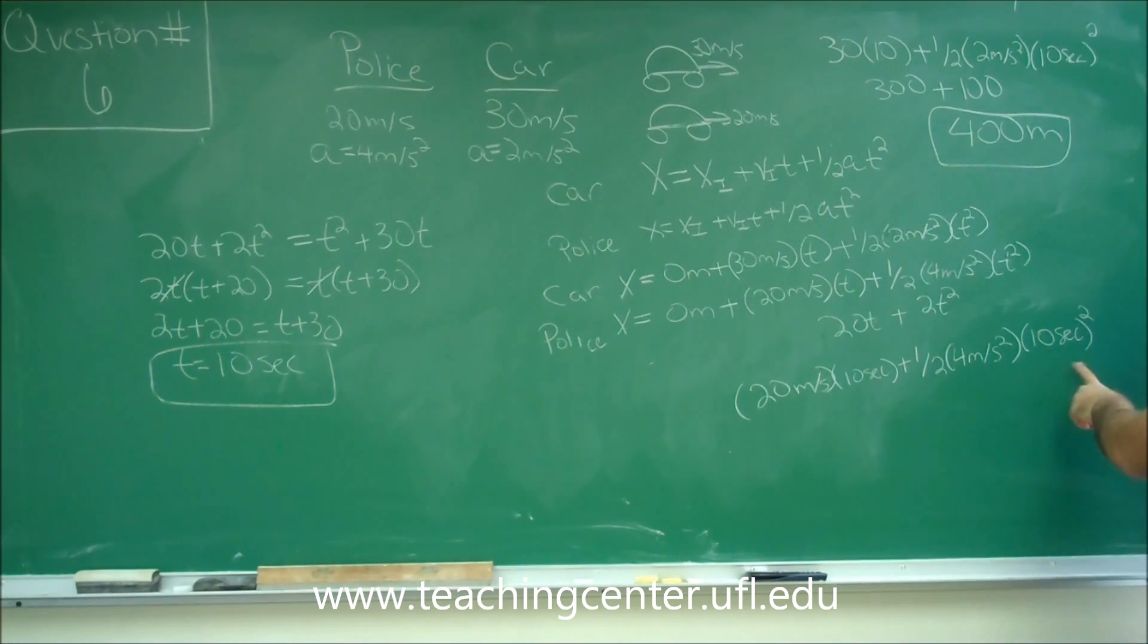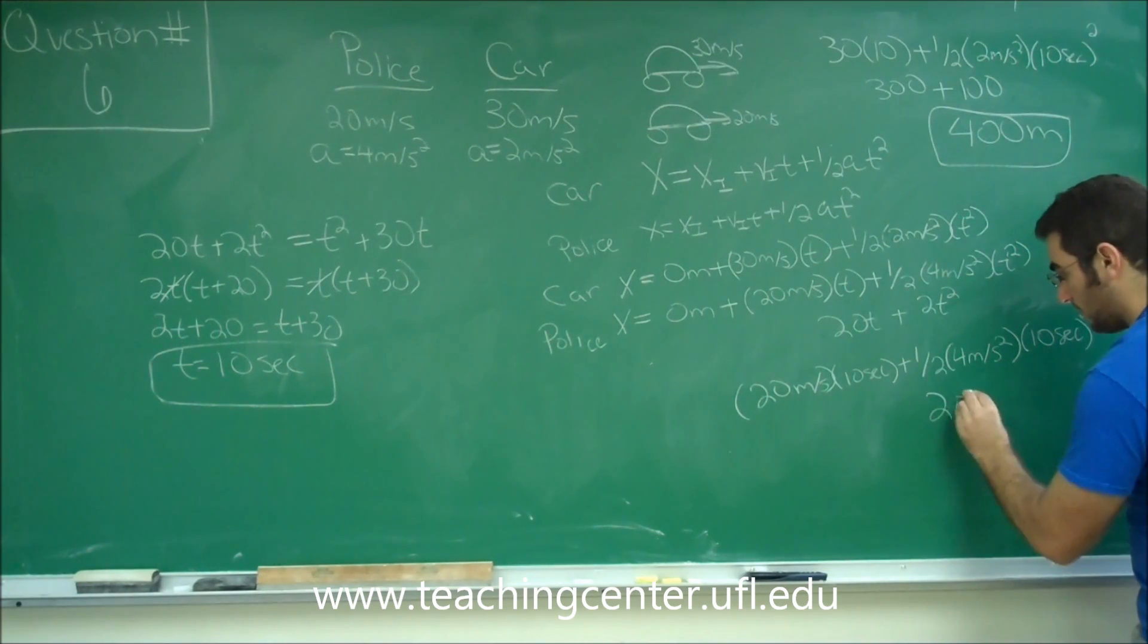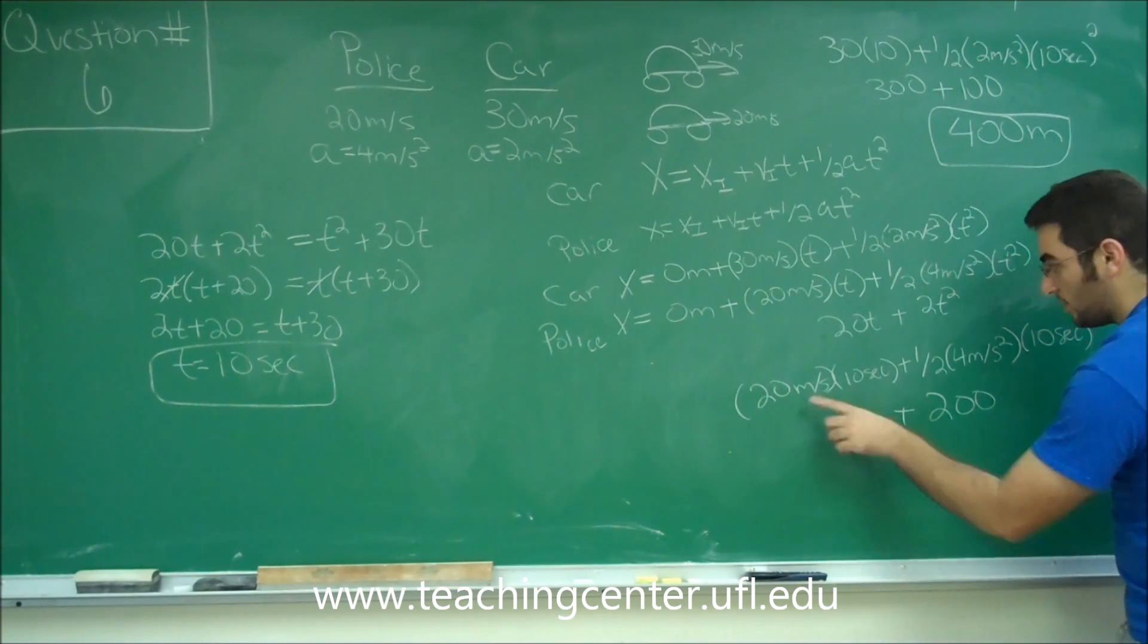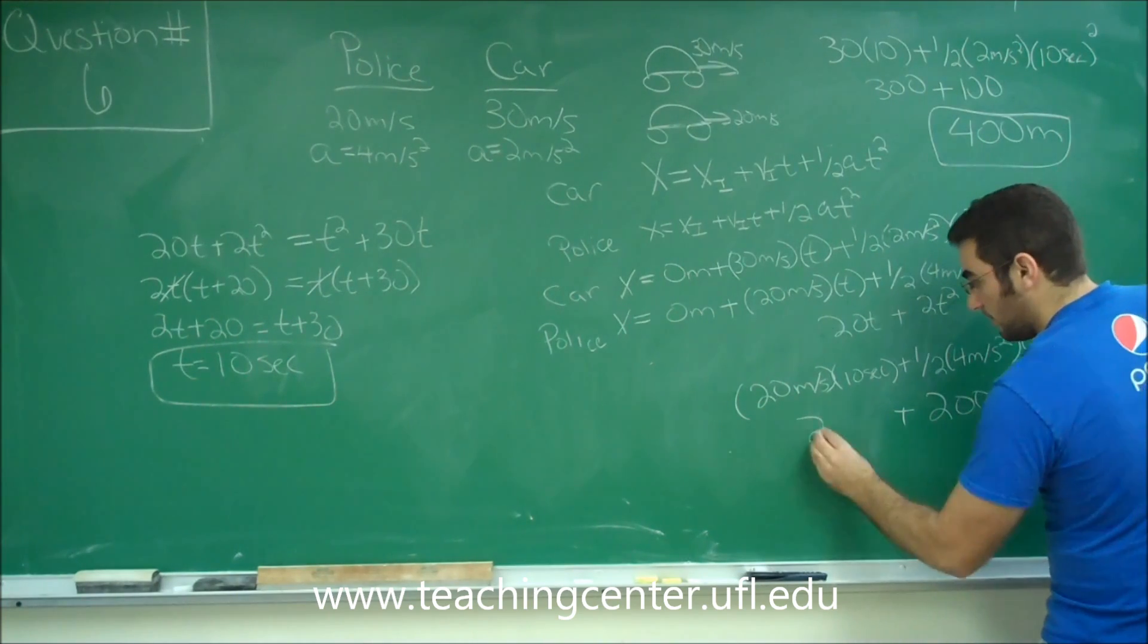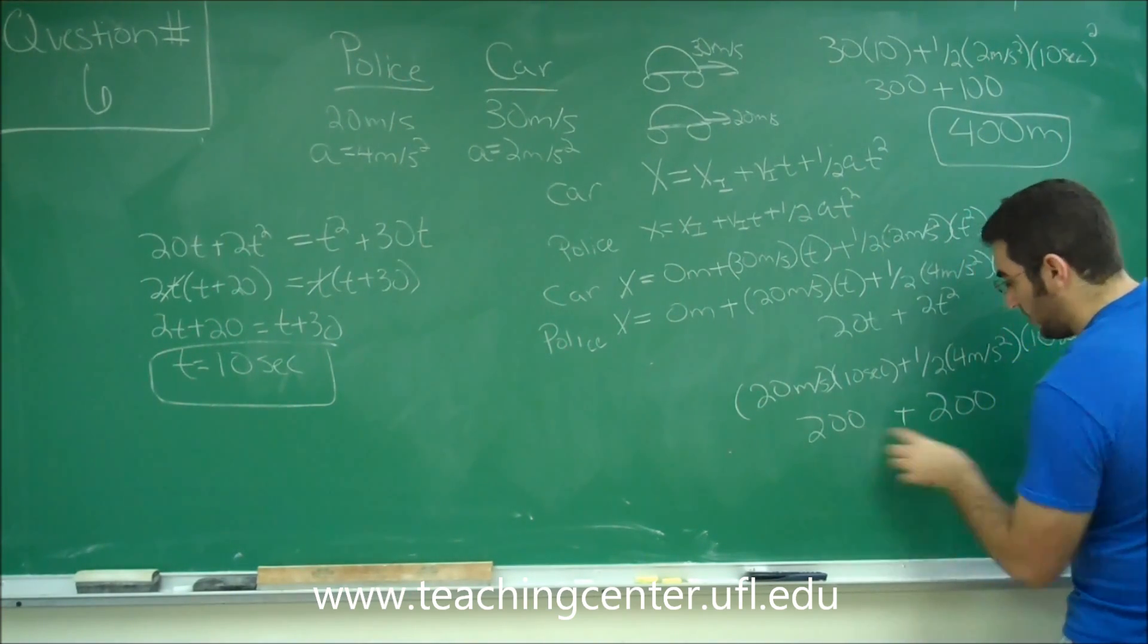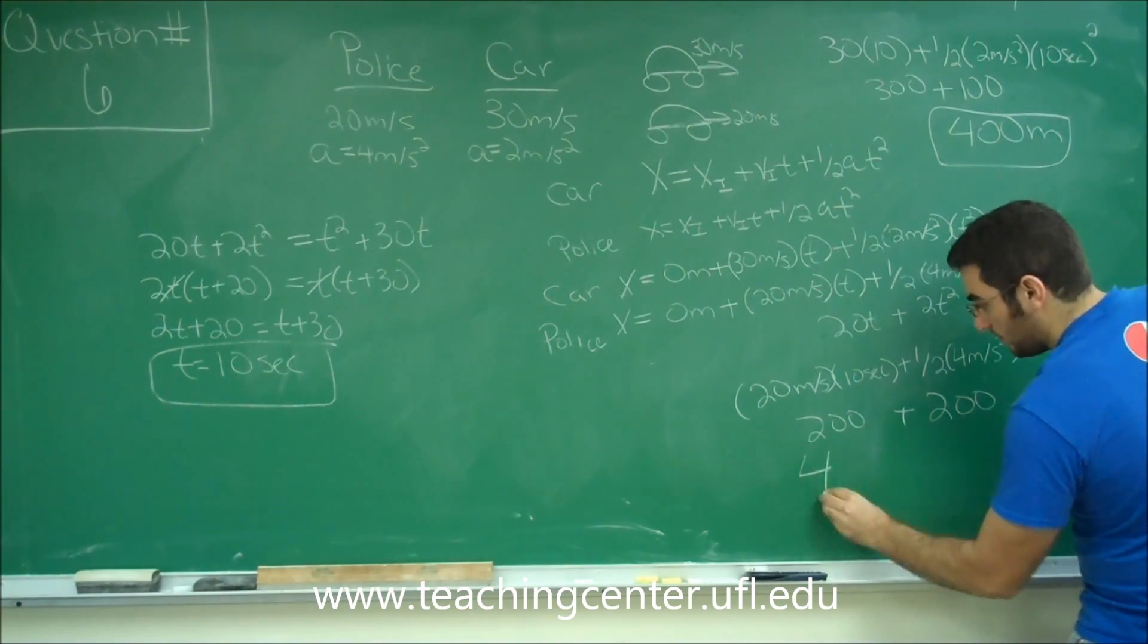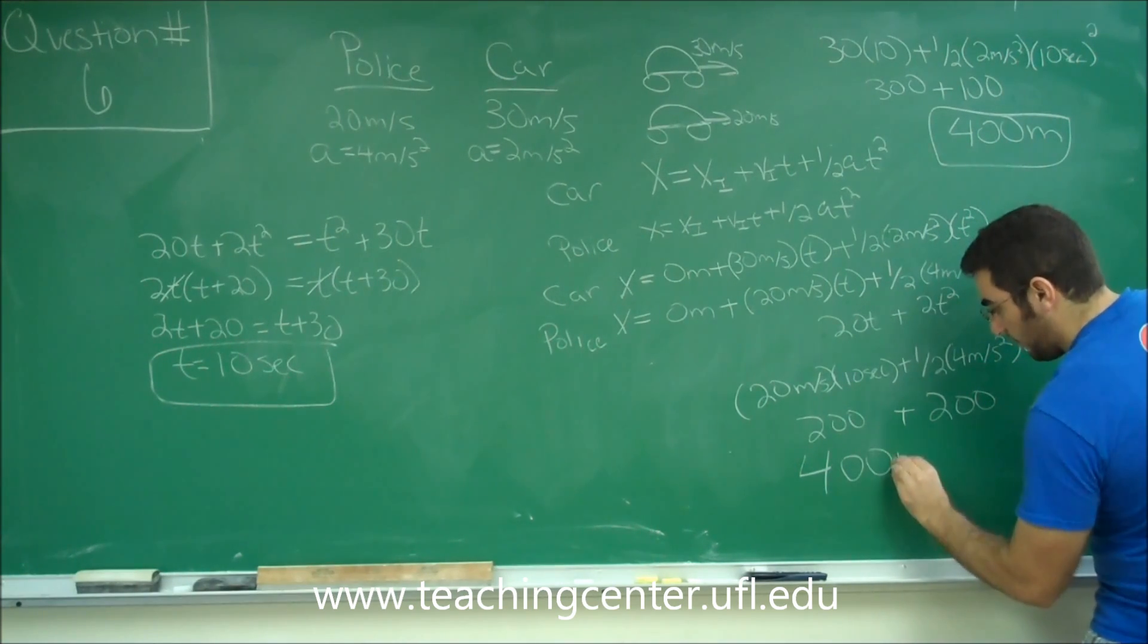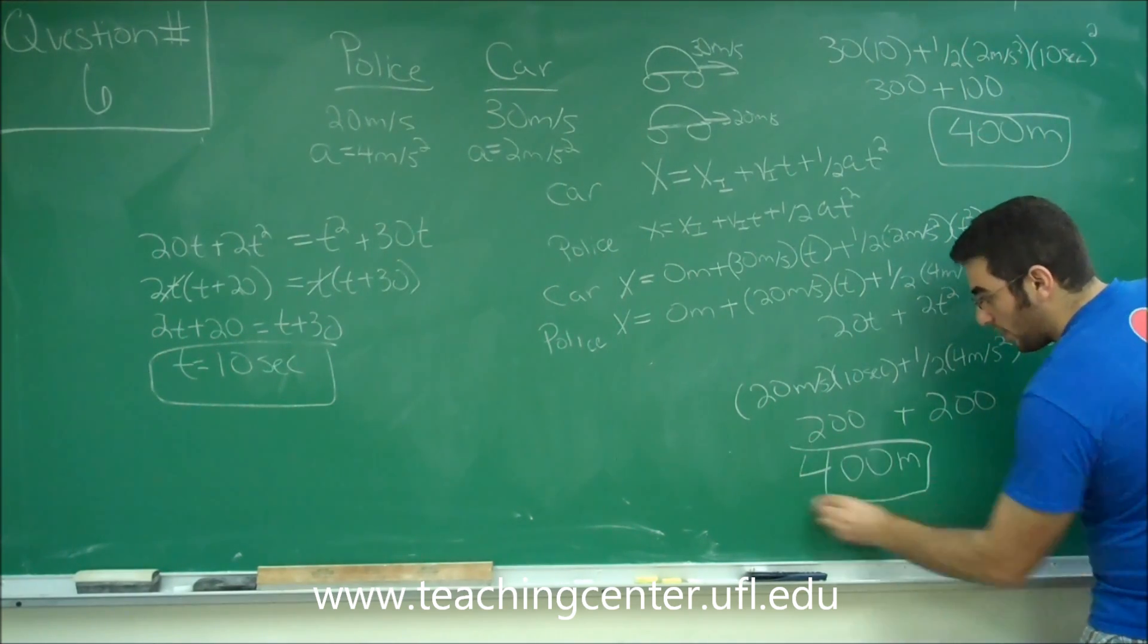And time was 10 seconds. So 10 squared is 100. 400 divided by 2 is 200. 20 times 10 is 200. 200 plus 200 is 400 meters.